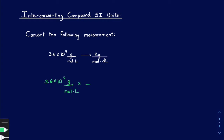Since grams is on top, grams would also need to be on the bottom to cancel out that unit, which means kilograms would be on top. From the previous video, we know that one kilogram has 1000 grams — 10 to the third grams — and that's your conversion right there. Let's follow through with the calculation. The grams cancel out, and we're left with 36 kilograms over mole times liter.